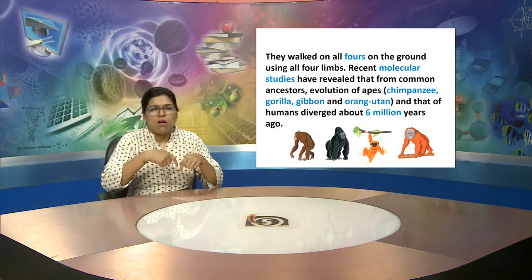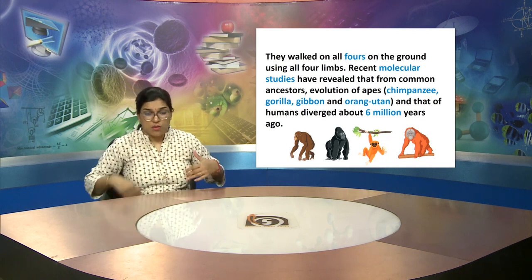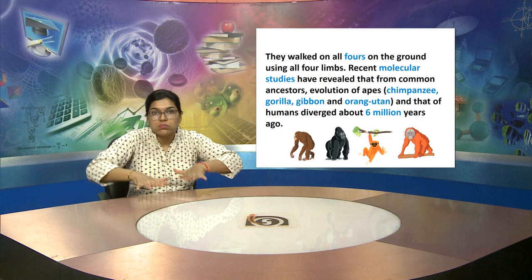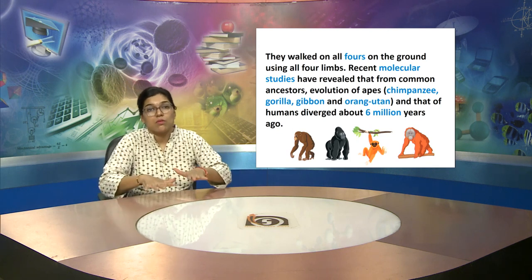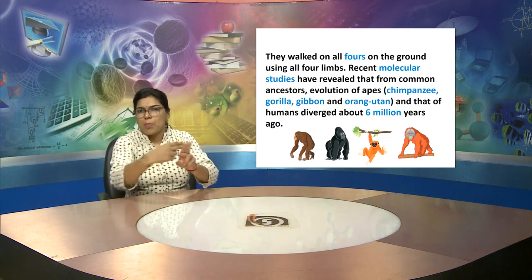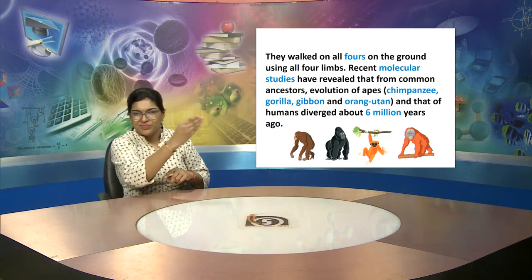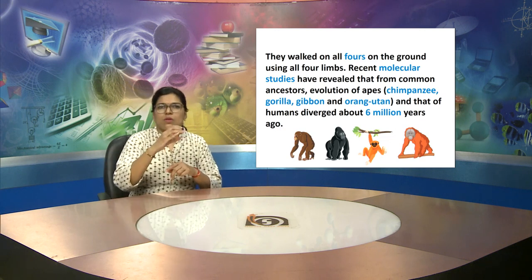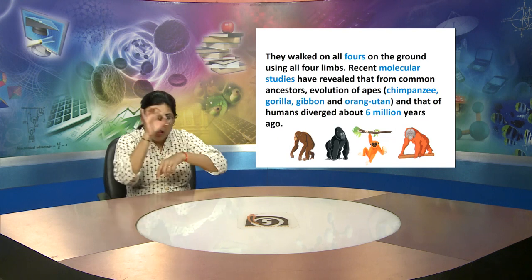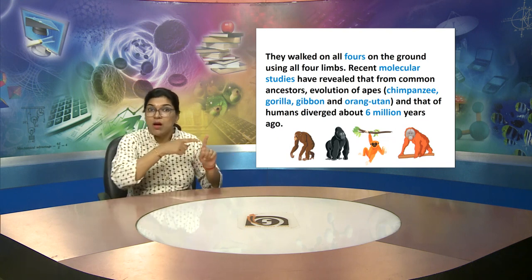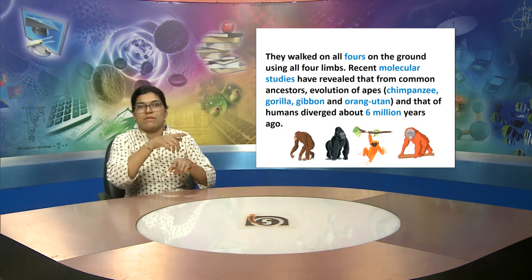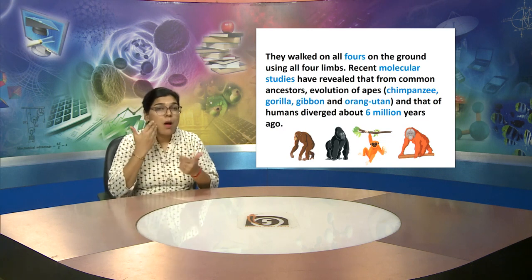They walked on all fours on the ground — two hands and two feet. Recent molecular studies have revealed that from common ancestors, the evolution of apes — chimpanzee, gorilla, gibbon, and orangutan — were four species. When genetic study was done, it was found that humans diverged about six million years ago, and the ancestors of all these four species were common.